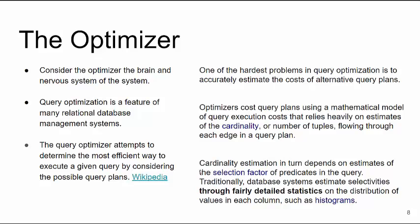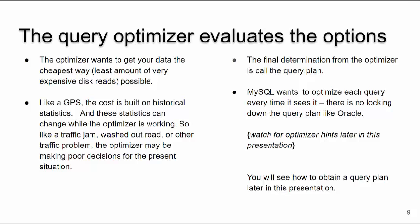Cardinality — how unique the data is in a column — also helps. The more cardinality you have, the more uniqueness in a column, the better. The query optimizer evaluates various options and wants to get results in the cheapest way. It's kind of like a GPS: if I was going to go to lunch, the optimizer's historical information may not always be optimal — it may not know my neighbor blocked the driveway or there's a train on the tracks. The final determination the optimizer makes is called a query plan. There are also optimizer hints to talk the optimizer into doing things your way, but we won't cover those today.